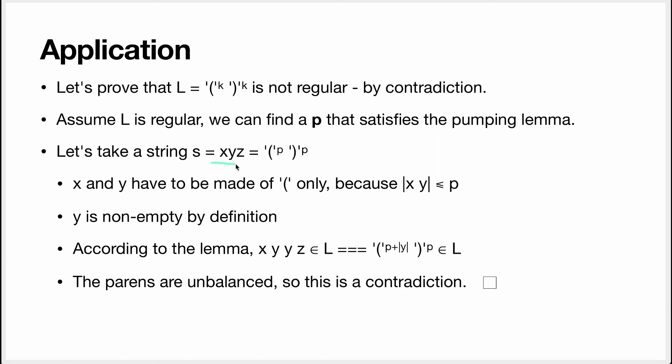We actually know what this is. Because we know that y only contains opening parentheses, and we know that x, y, z is p opening parentheses and p closing parentheses, well now we have p plus the length of y opening parentheses and p closing parentheses. This is not balanced.